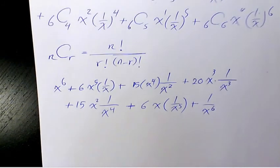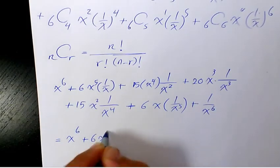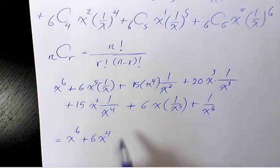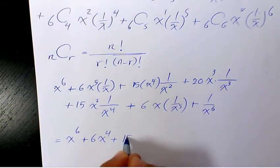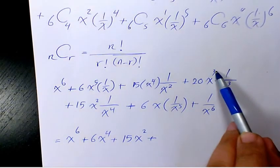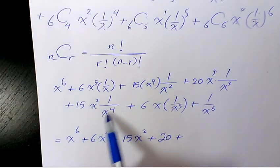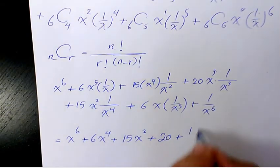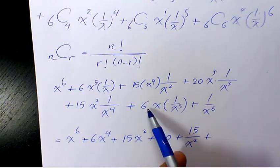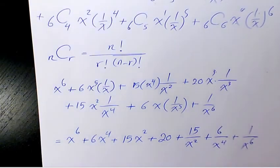When you simplify, that gives: x^6 + 6x^4, because x^5 divided by x is x^4. Then 15x^2, because x^4 divided by x^2 is x^2. Then 20, because x^3 divided by x^3 is 1. Then 15/x^2, because x^2 divided by x^4 is 1/x^2. Then 6/x^4, because x divided by x^5 is 1/x^4. And finally 1/x^6.